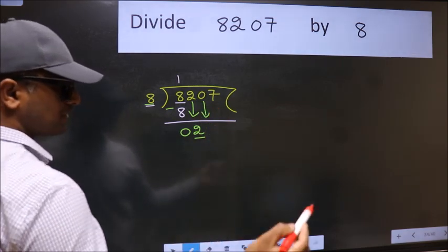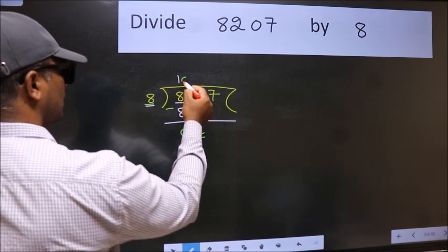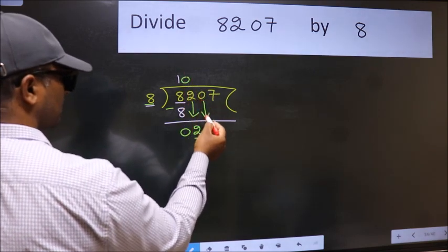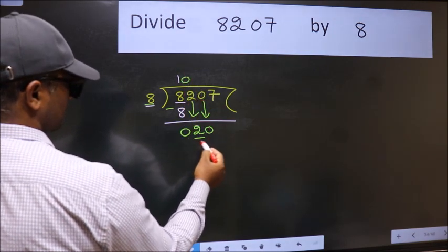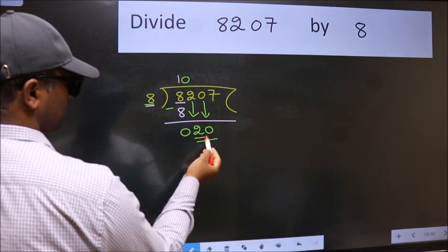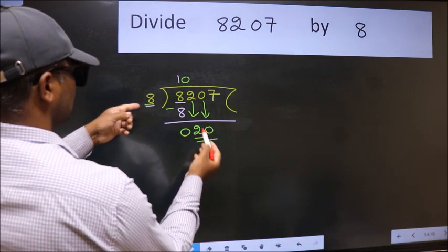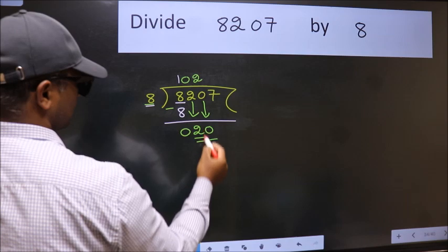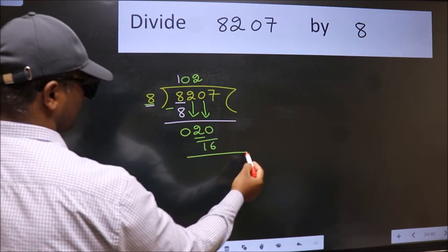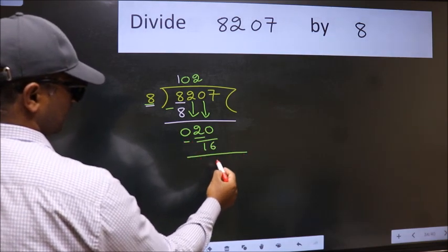And the rule to bring down second number is put 0 here. Then only we can bring this number down. So, 20. A number close to 20 in 8 table is 8 to 16. Now, we subtract. We get 4.